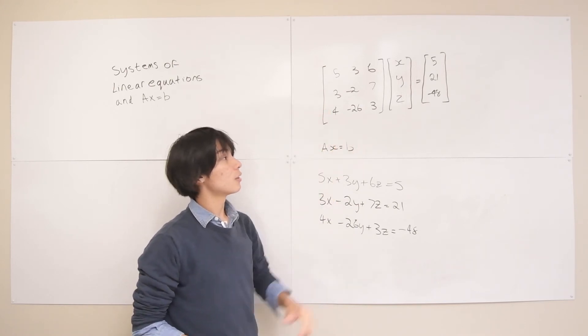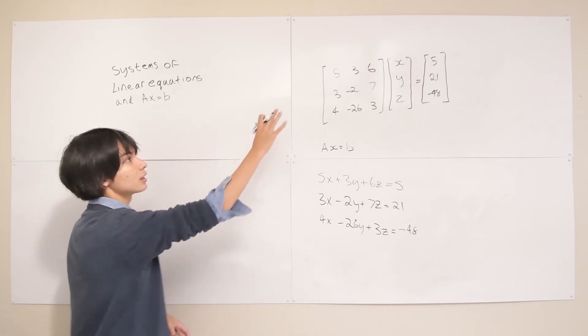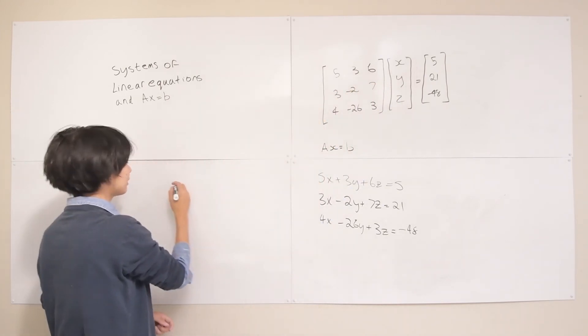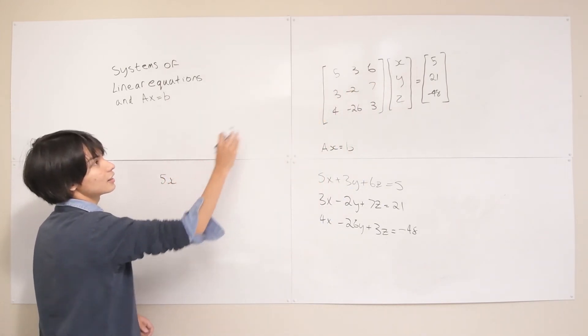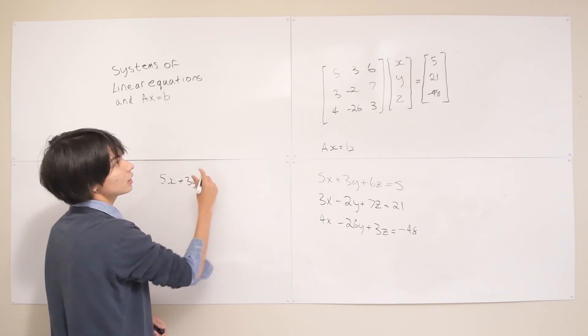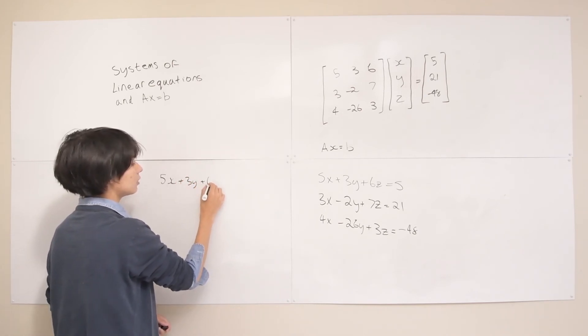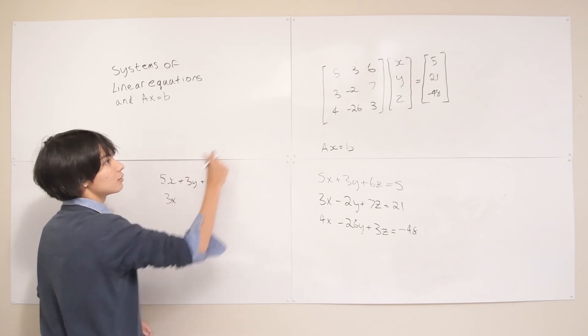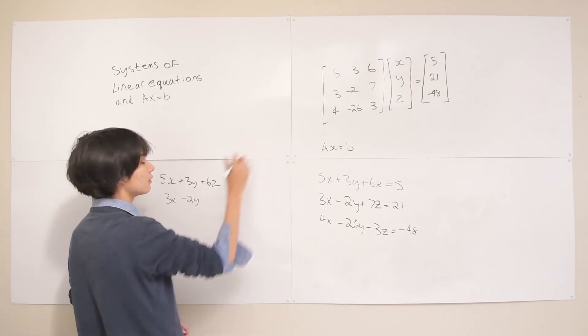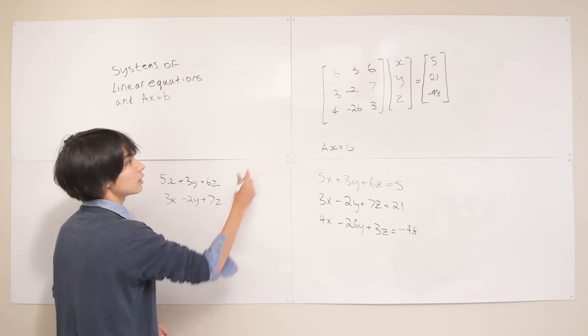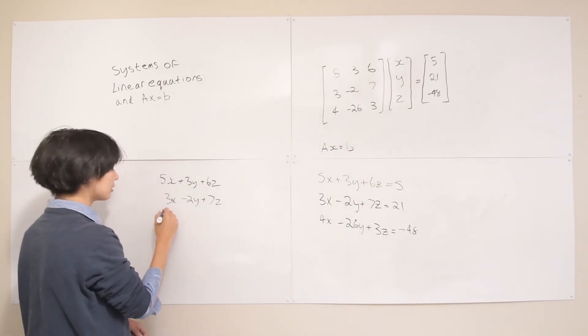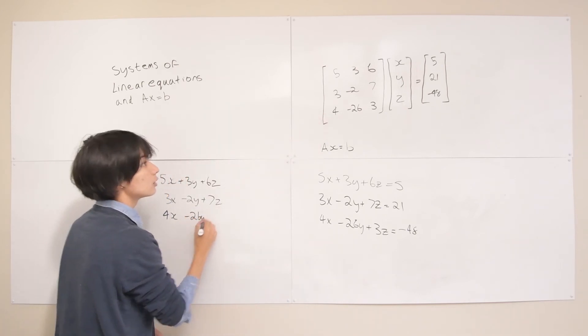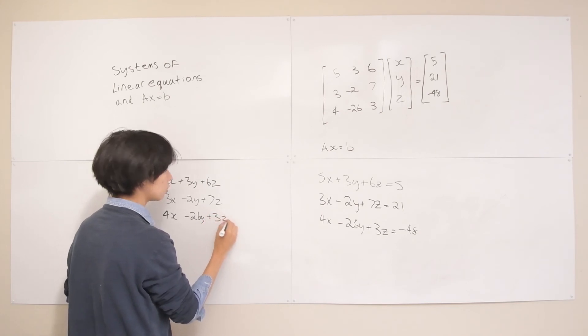So you'll see why this works in just a second. We just learned how to do matrix vector multiplication in the last lecture so we're going to multiply this out and see what we get. If we multiply this out we're doing dot products, so we're gonna get something that looks like 5x plus 3y plus 6z. And then 3x minus 2y plus 7z. And then the bottom row, 4x negative 26y and 3z.